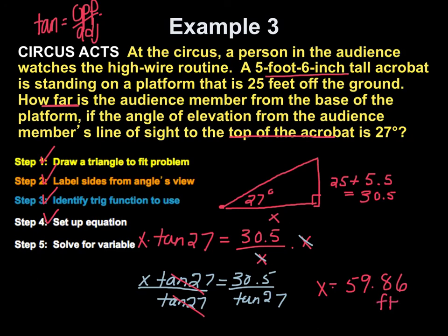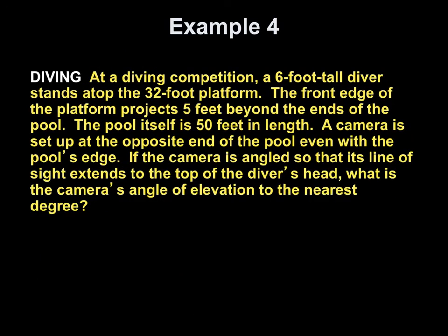So, just double check, make sure that that makes some sense in terms of the problem. Okay, so, example number four, we have a diving competition. A six foot tall diver stands atop the 32 foot platform. The front edge of the platform projects five feet beyond the ends of the pool. The pool itself is 50 feet in length. Hi, Vicky. Hi, Thank you.